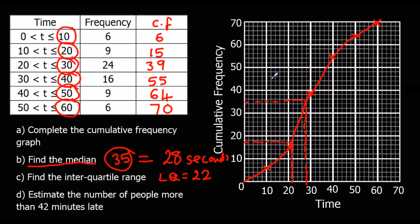Upper quartile. So three quarters of 70. So that would be 17.5 plus 35. That would be 52.5. So just above the 52. And then from there, we go down. So that's in the middle. So that would be 39. So the upper quartile, 39 seconds. So the interquartile range, 39 take away 22, and that is 17 seconds.